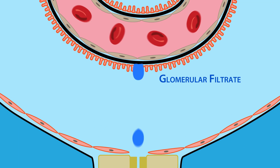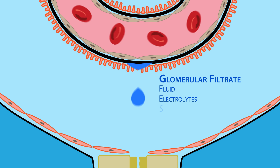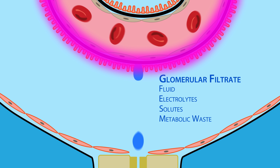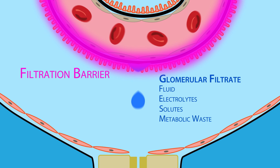This begins as fluid, electrolytes, solutes, and metabolic waste products move from the glomerular capillaries across the glomerular filtration barrier into the Bowman space.